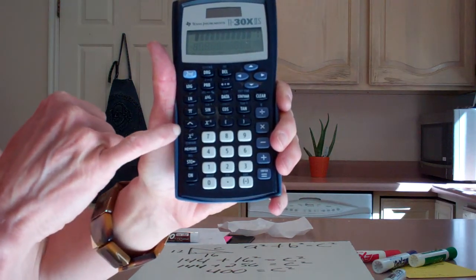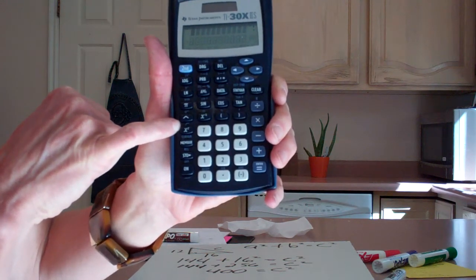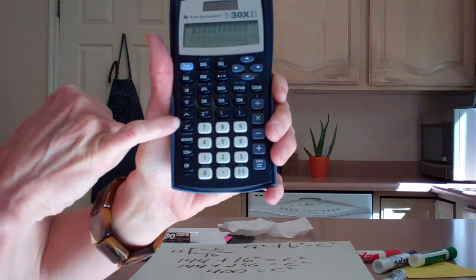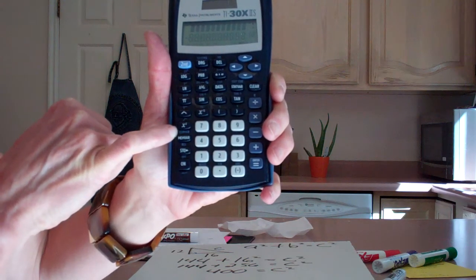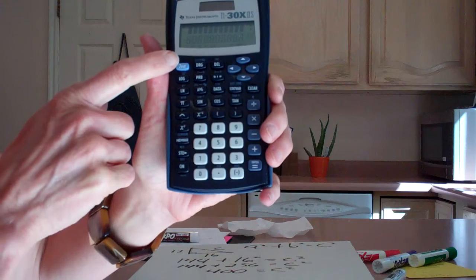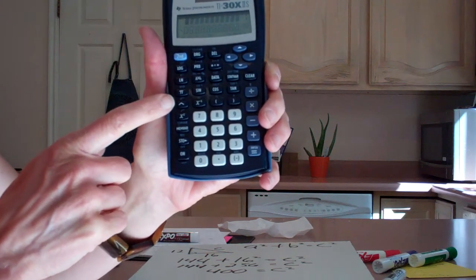On this calculator, there's a little tiny blue square root symbol on top of the X squared button. If it's blue above the X squared on the calculator, I need to make sure I punch my second button up here, and then I can use my X squared button.